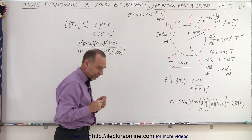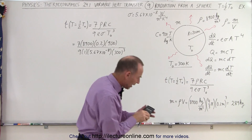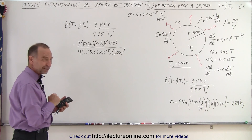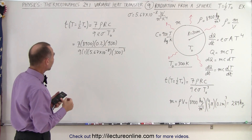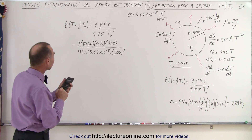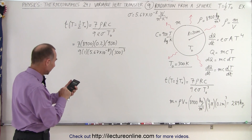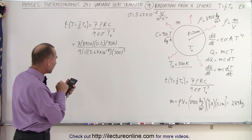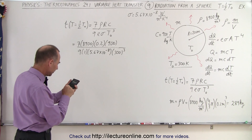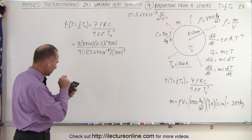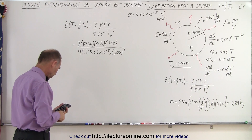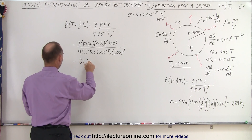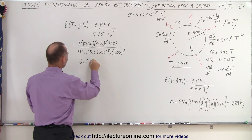Let's see what that equals — good thing we have calculators. Seven times 8,900, divided by 9, divided by 5.67×10⁻⁸, divided by 300, divided by 300 squared equals — and there it is: 813,900 seconds.